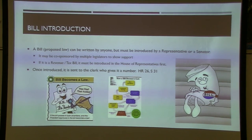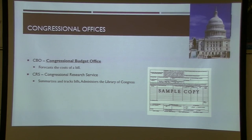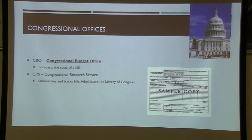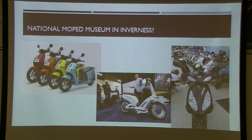Once a bill is introduced, the Congressional Budget Office — which is nonpartisan — gives a cost estimate. For example, if I want to build a moped museum in Inverness, the CBO might say it'll cost $1.4 million to build and $300,000 a year to run. The Congressional Research Service tracks where the bill is and which committee it's in. The Library of Congress also tracks the bill. These are important support services in the legislative process.